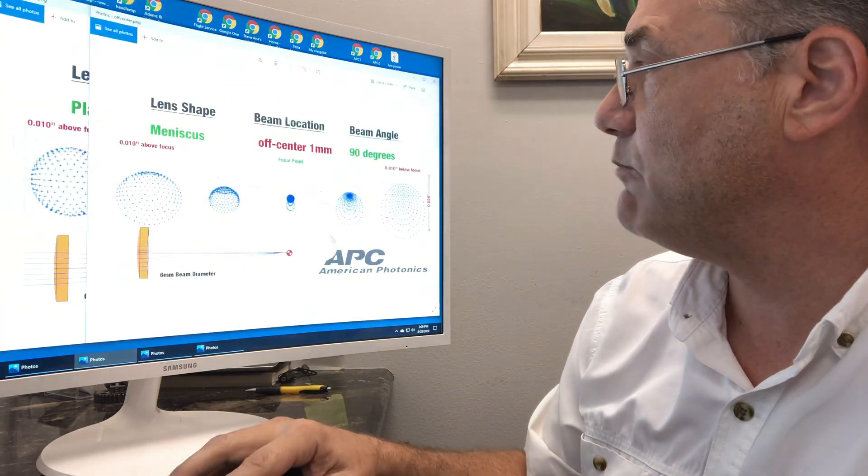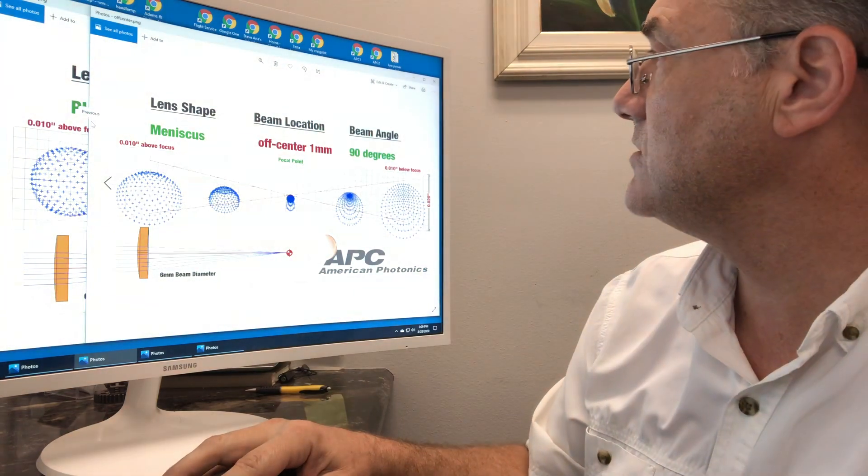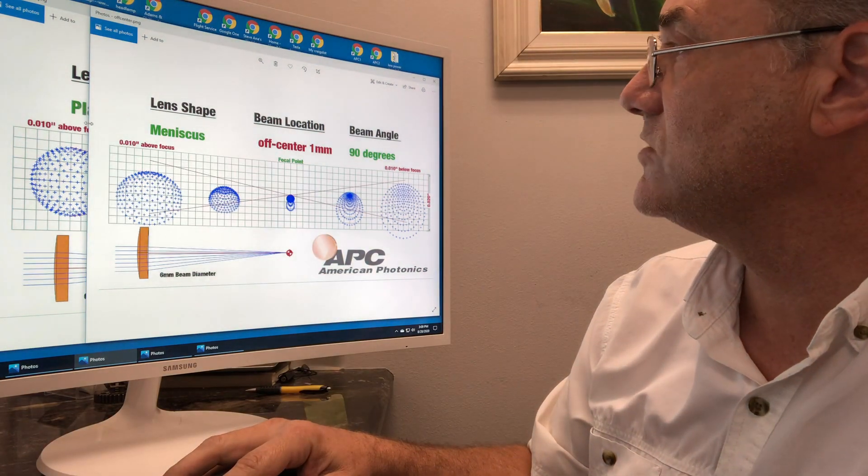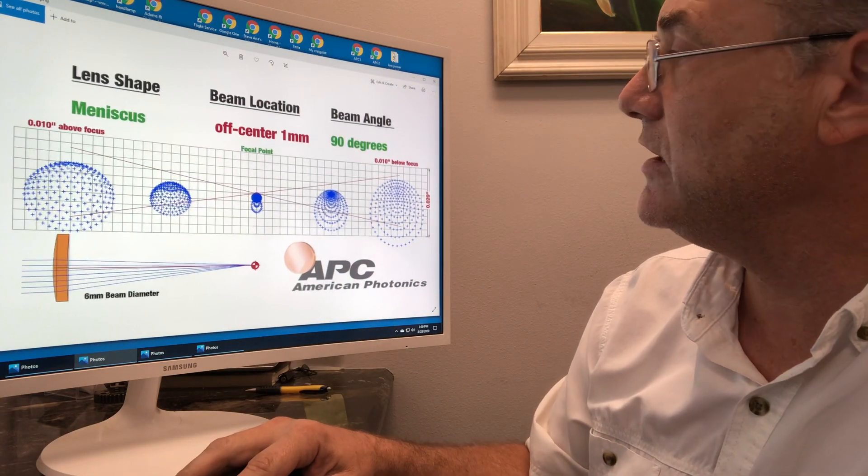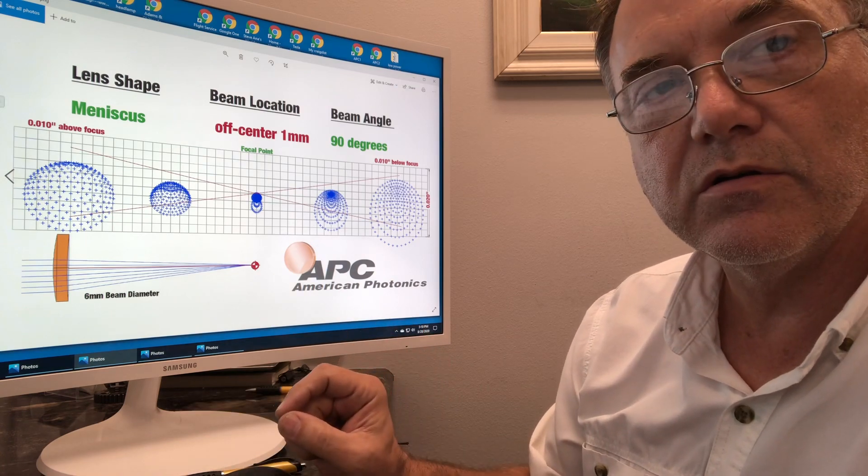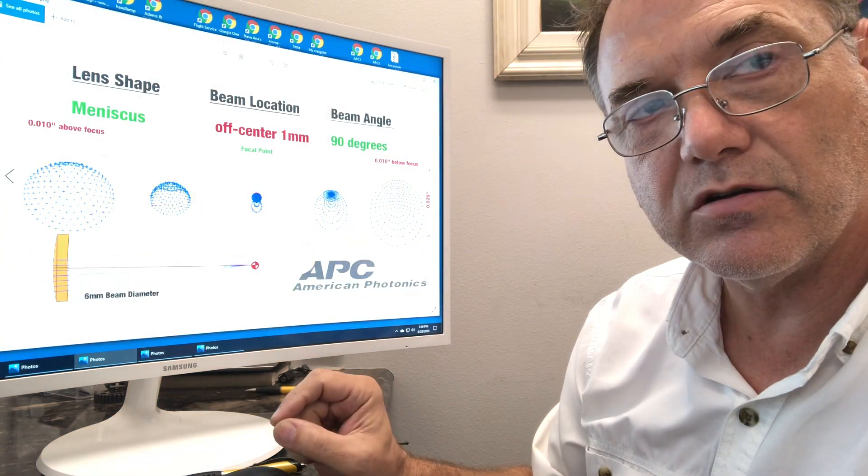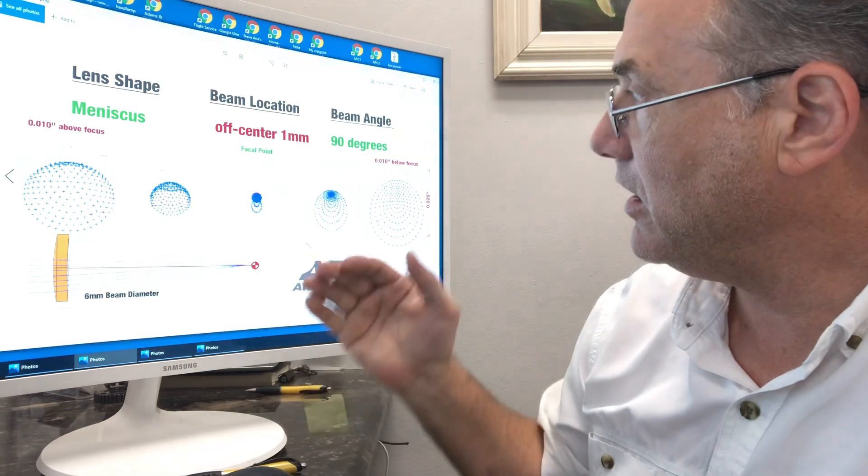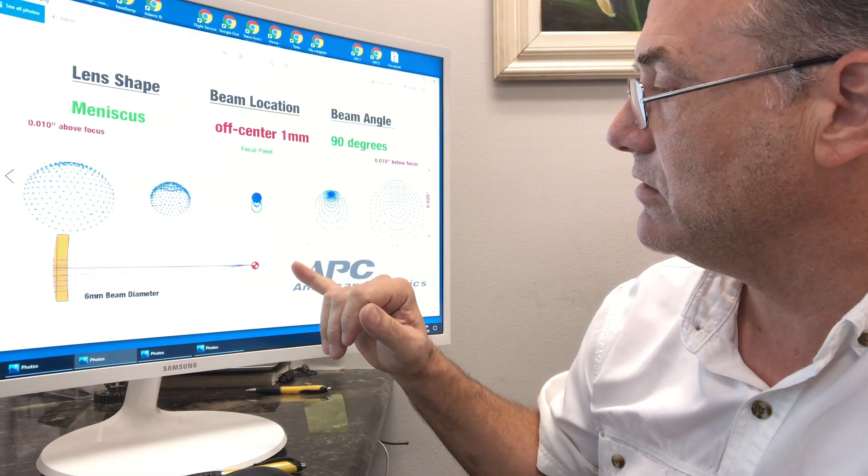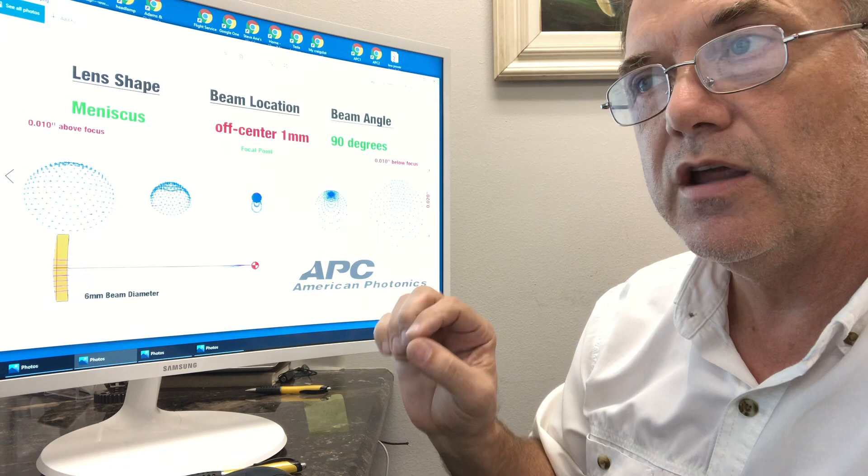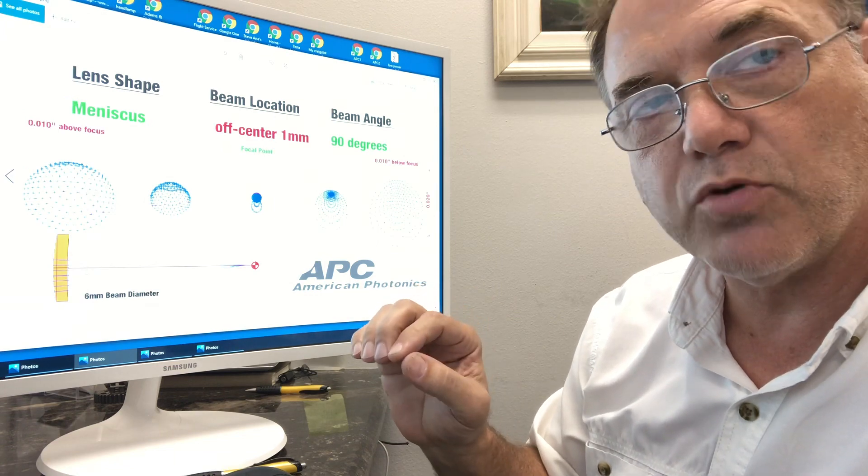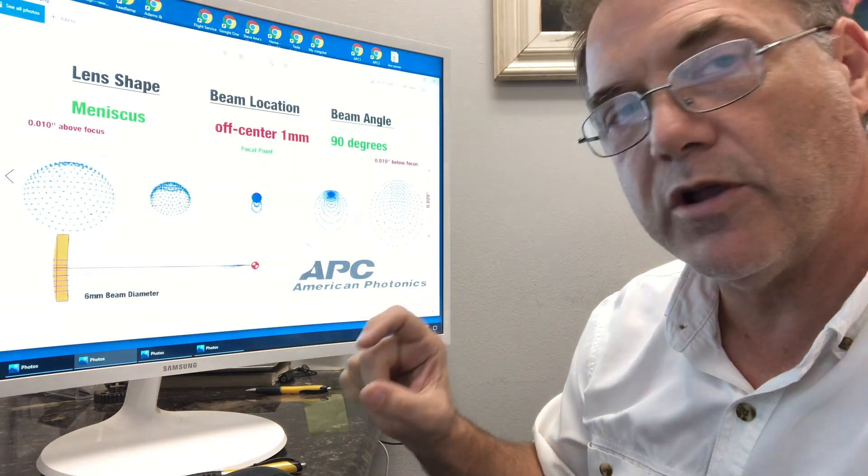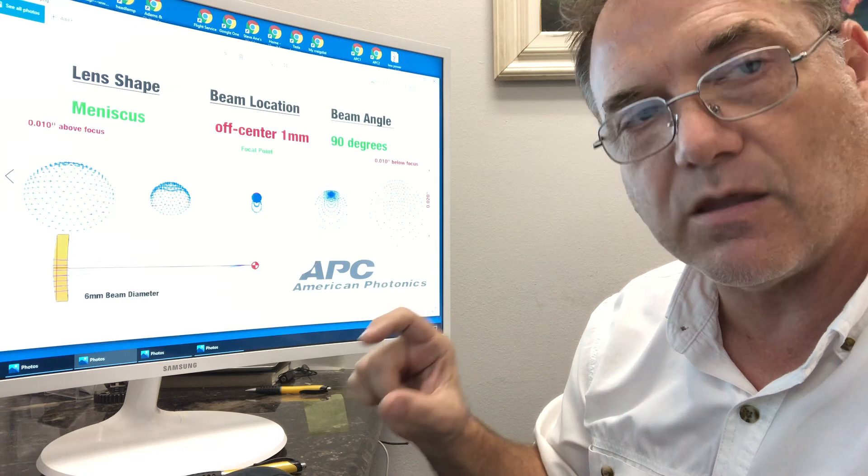The problem is when you have poor beam alignment. This is when you bring it in and you're 1mm, 40-thousandths off-center. This is what your beam looks like. And that 1mm is only, your beam diameter is probably 6mm, and if it's 1mm off, we're only talking 1/6th of the beam.